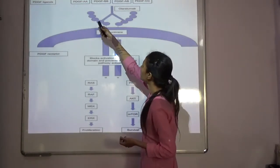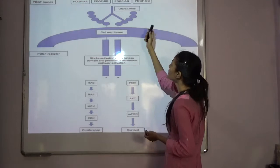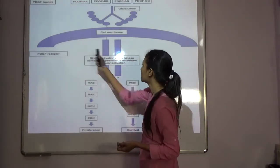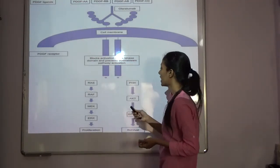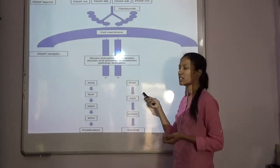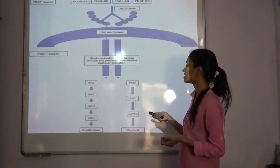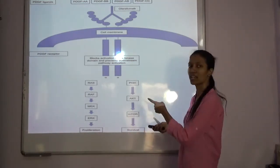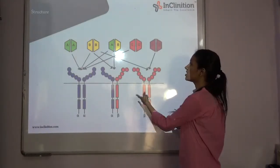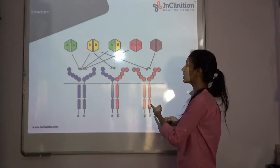The ligands for PDGFR-alpha include PDGF-BB and PDGF-AB/CC. So Olaratumab, instead of these ligands, binds with the receptor and hence the further proliferation and survival cascade cycles are blocked, and thus cell growth is stopped. This is the structure for Olaratumab, which is a monoclonal antibody.